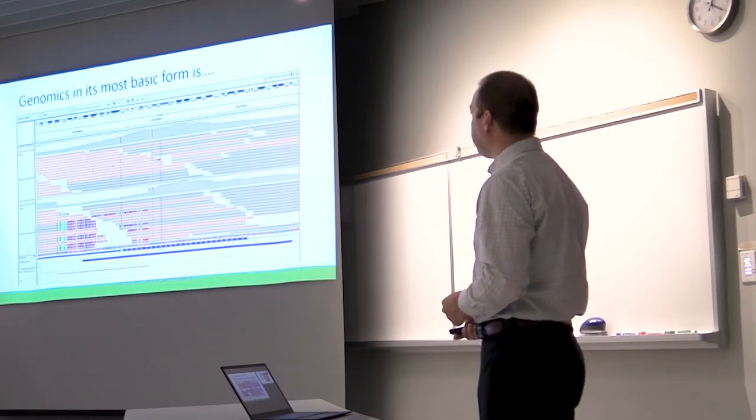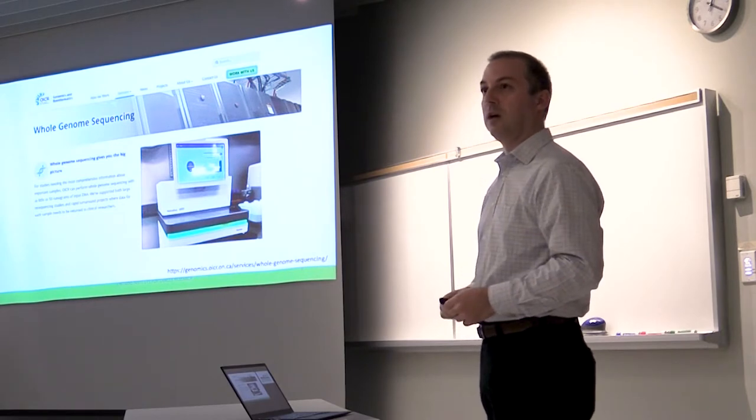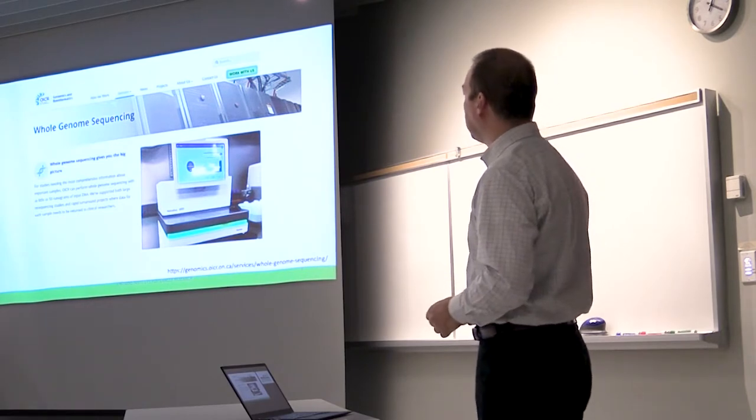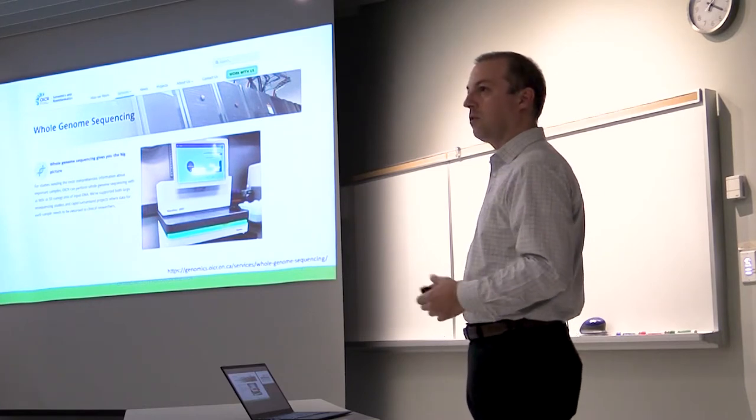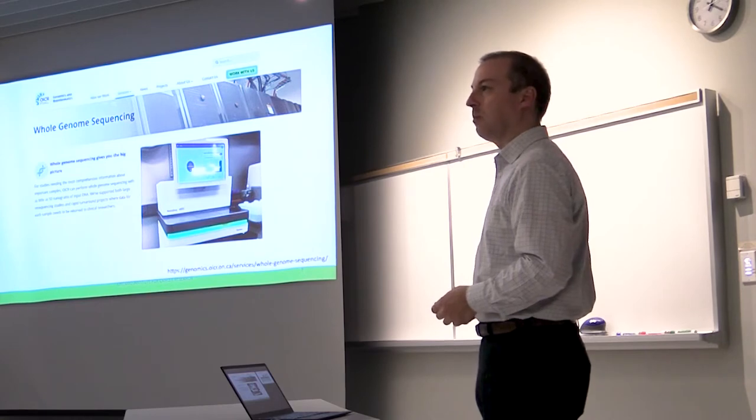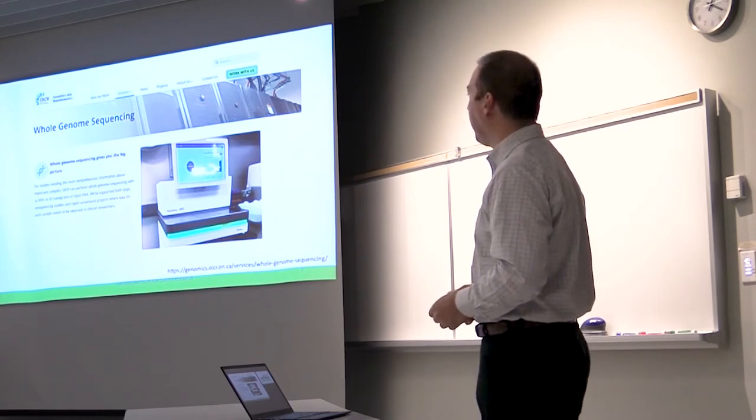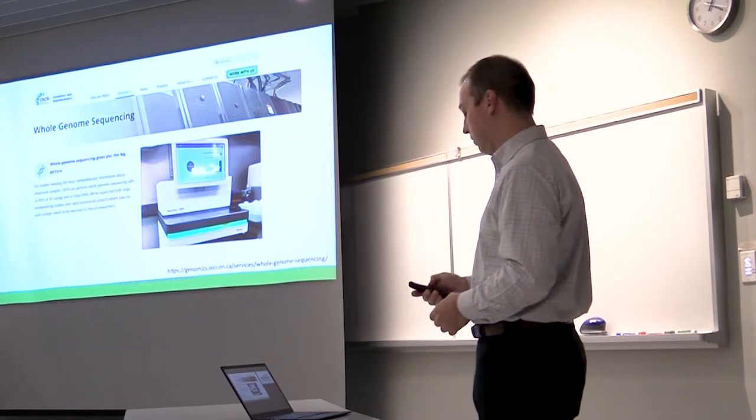So where does this data come from? Most of the time it comes from short read sequencers of the Illumina family. This is a picture of OICR's NovaSeq. For those that don't know, this is pretty much the state of the art machine available on the market in this space. It's predominantly used for whole genome sequencing but with tricks in the lab you can use it for anything else.